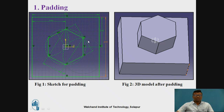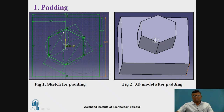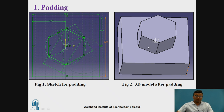Before going to the 3D, we have to construct the 2D sketch. First, we create a rectangle of 200 by 200 dimensions. Here we are providing the dimensions, and after that we create a hexagon with the help of a profile toolbar in the sketch menu. After providing the padding feature, this will be our 2D sketch and we can get a 3D model. We have to provide the thickness for the particular rectangle and the hexagon. This will be the 3D model after the padding feature.